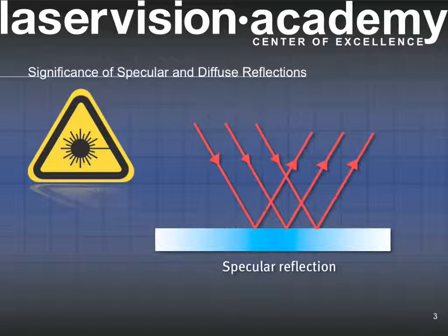While the beam direction may have changed, properties such as divergence, diameter, and power density may not have been altered.